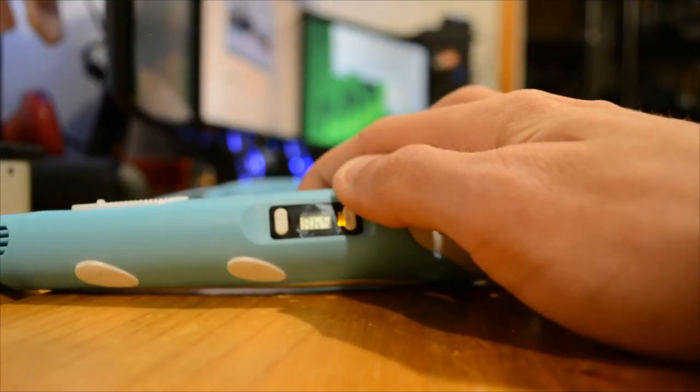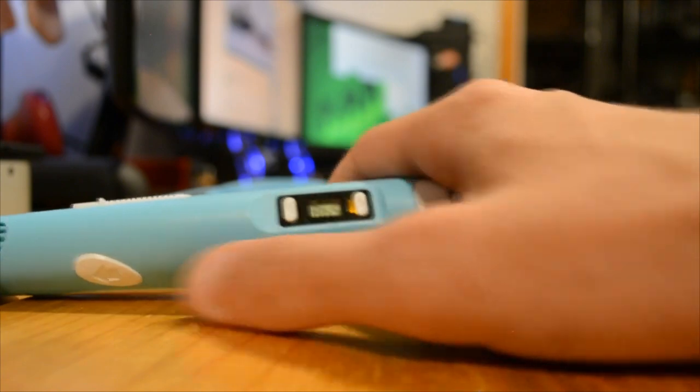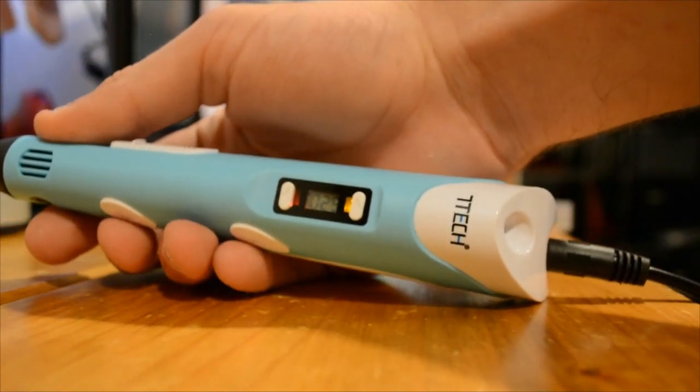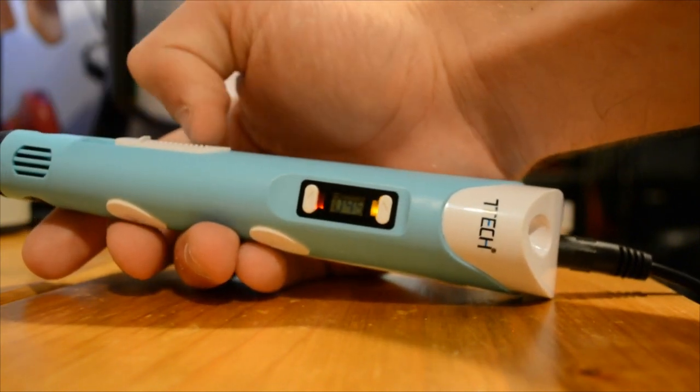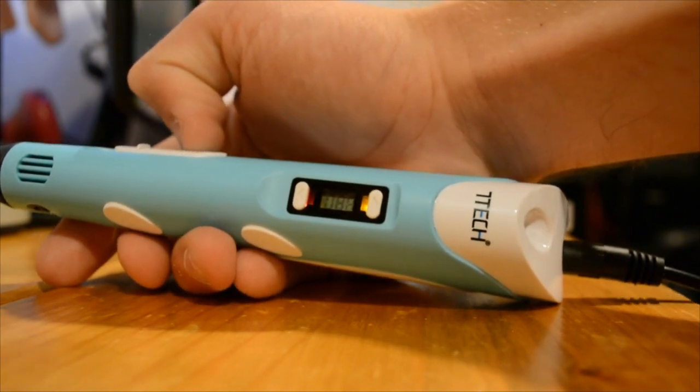So now to get it started and heat it up, all you want to do is check to make sure that this is at ABS, which is the filament type. Then you want to press the load button once. And as you can see, the number is going to start increasing. That's the temperature of the pen. Right now it has a red light. It's going to turn green whenever it is at the right temperature.